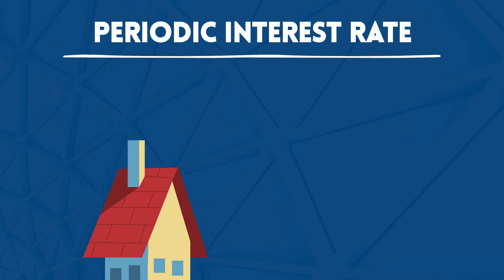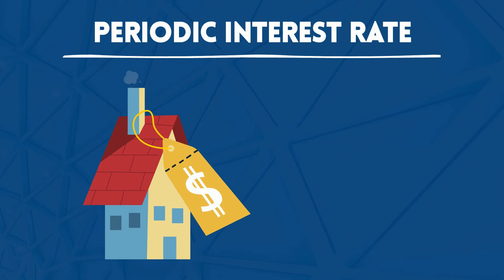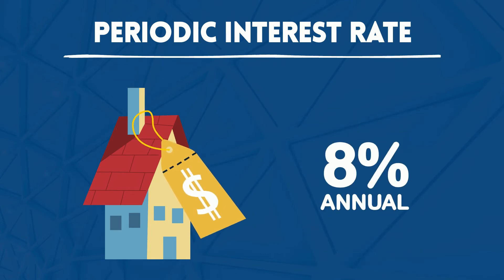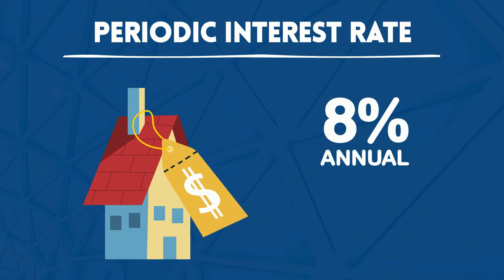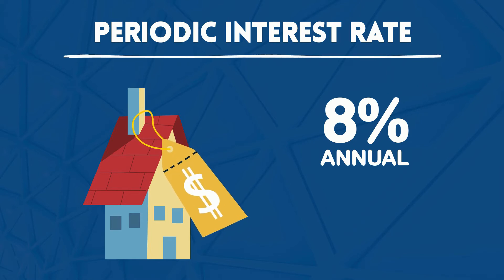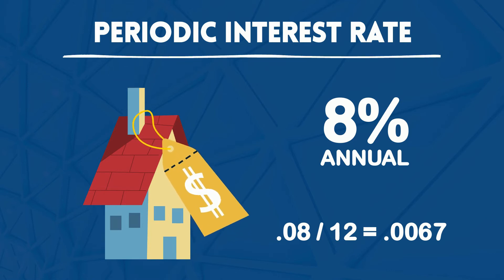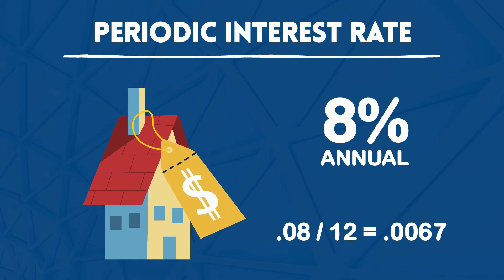The interest on a mortgage is compounded or applied monthly. If the annual interest rate on a mortgage is 8%, the periodic interest rate used to calculate the interest assessed in any single month is .08 divided by 12, which is equal to .0067 or .67%. The remaining principal balance of the mortgage loan has a .67% interest rate applied to it.